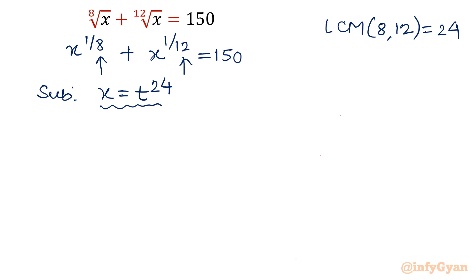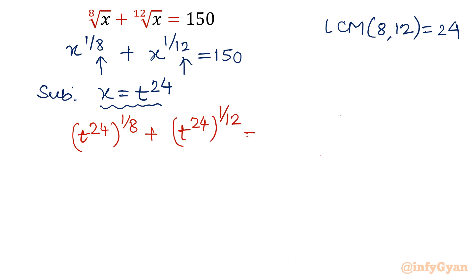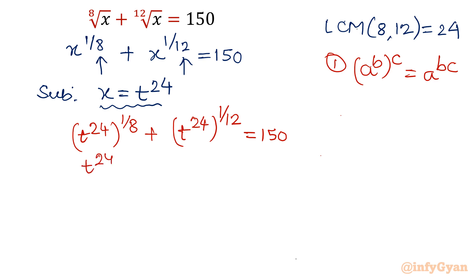Let us substitute. So if I substitute, the equation will be t power 24 whole power 1 over 8 plus t power 24 whole power 1 over 12 equal to 150. Now one exponent rule: a power b whole power c can be written as a power b times c. So I will write t power 24 into 1 over 8 plus t power 24 into 1 over 12 equal to 150. This will get simplified — 24 over 8 gives 3, and 24 over 12 gives 2.